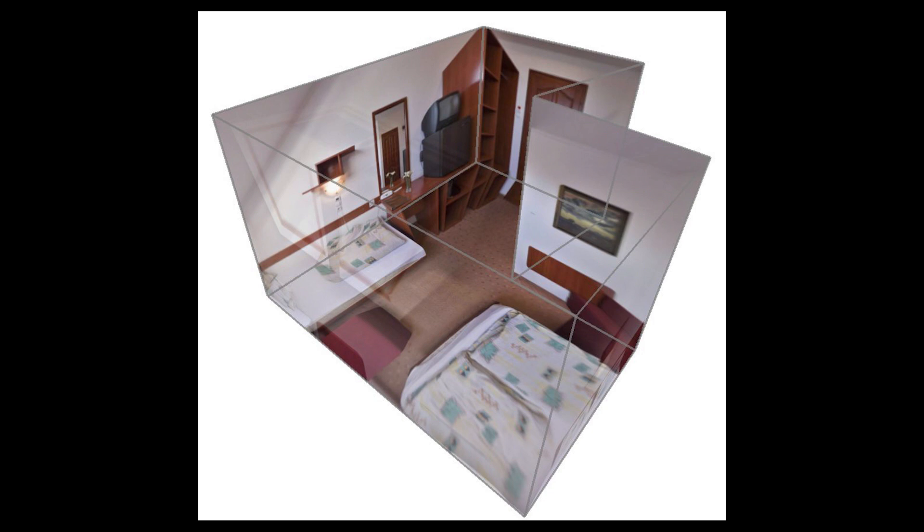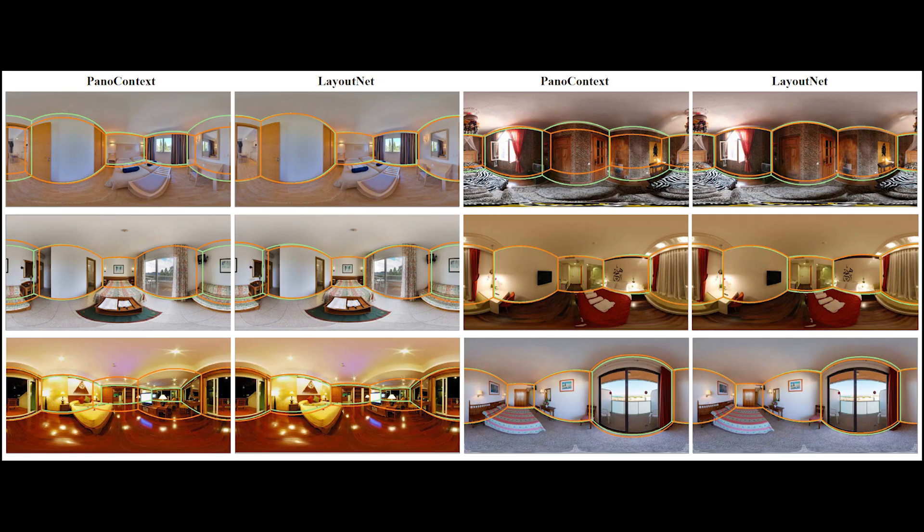Now that you have learned how this algorithm works, I will show you the results compared to other state-of-the-art techniques. Let's start with the panoramic images. The green lines are the ground truth, while the orange ones are the predicted wall boundaries. As you can see from the comparison, the predicted boundaries of LayoutNet are much closer to the ground truth than those of PanoContext.